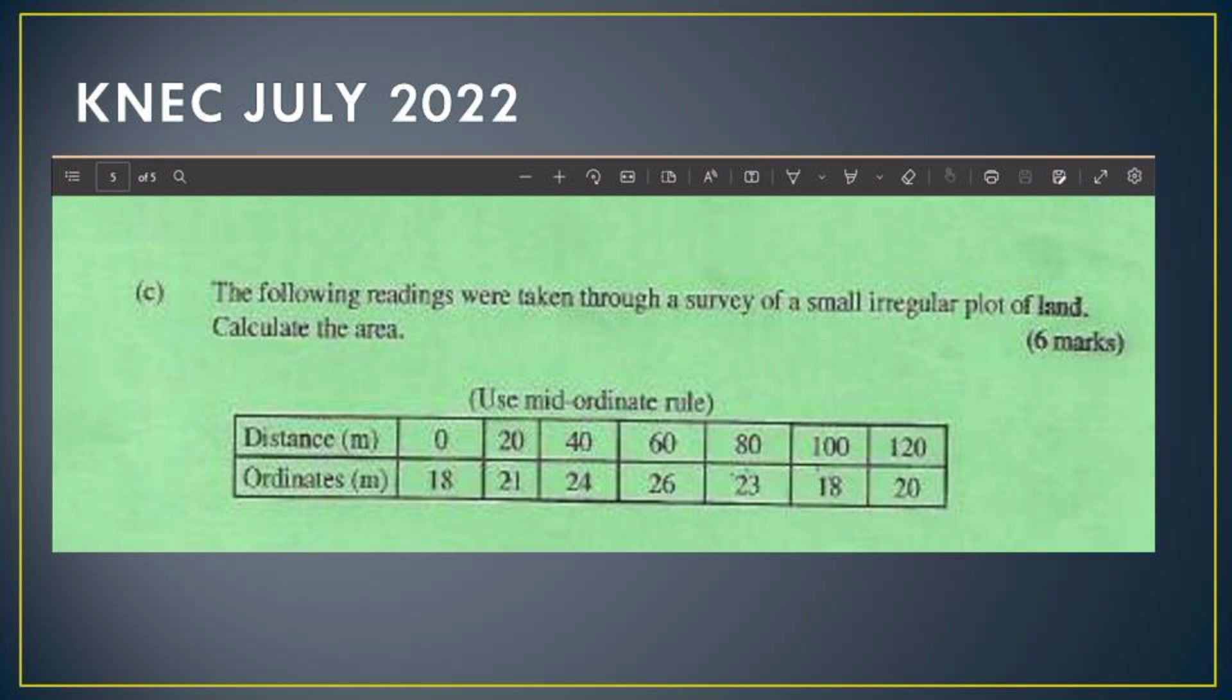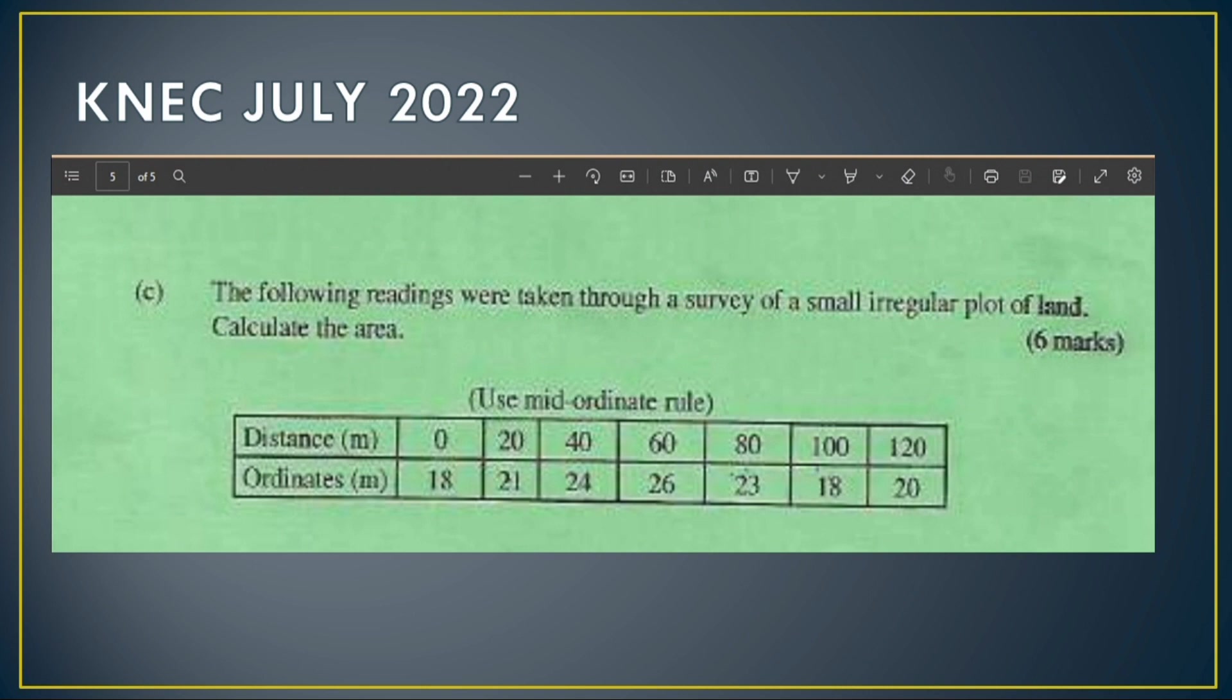Let's start by finding the mid-ordinates from the ordinates on the table. This is done by finding the mean of the two ordinates, or in other terms by taking the two ordinates and dividing them by two.